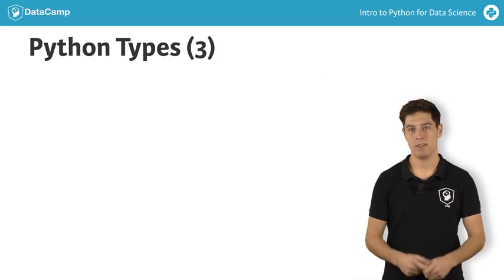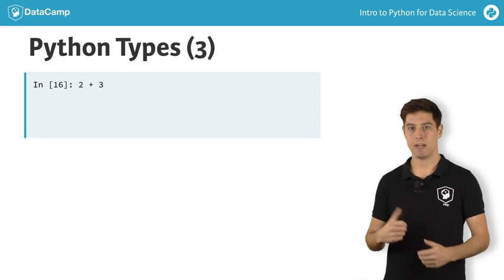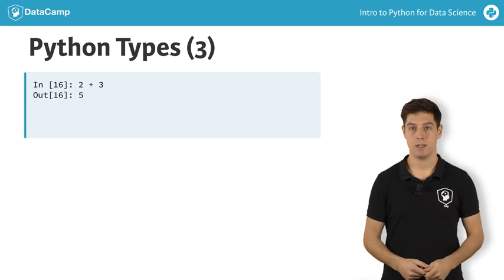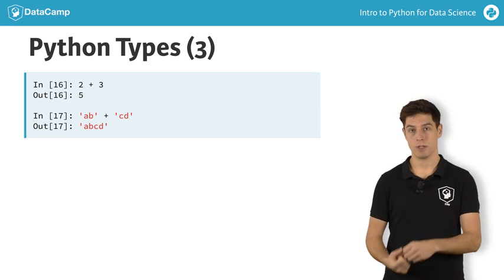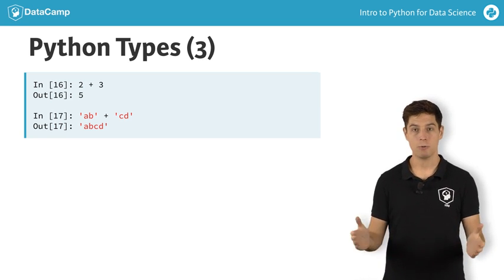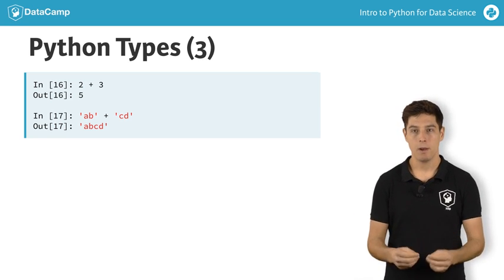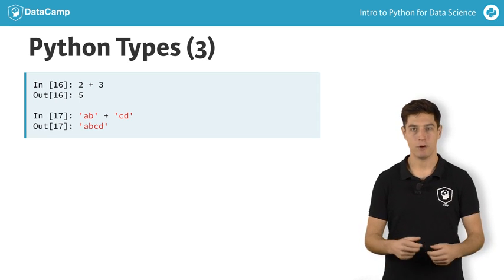There's something special about Python data types. Have a look at this line of code that sums two integers, and then this line of code that sums two strings. For the integers, the values were summed, while for the strings, the strings were pasted together. The plus operator behaved differently for different data types.